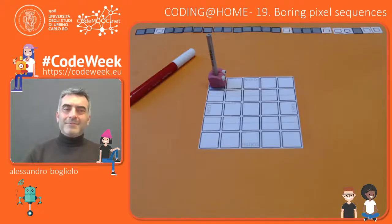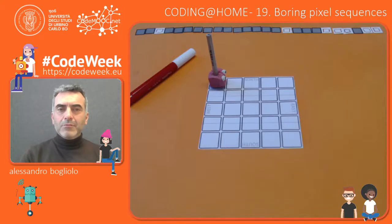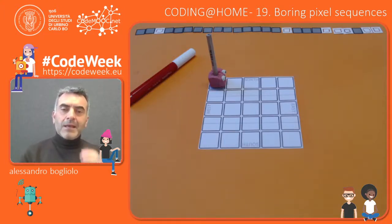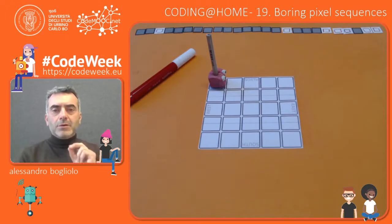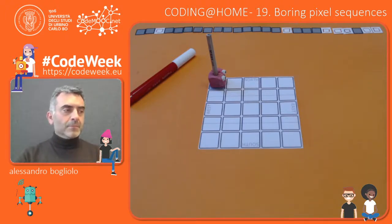Hi, welcome back to Coding a Tone. Today we are dealing with boring pixel sequences. But what's a pixel? A pixel is a picture element, the elementary component of an image.